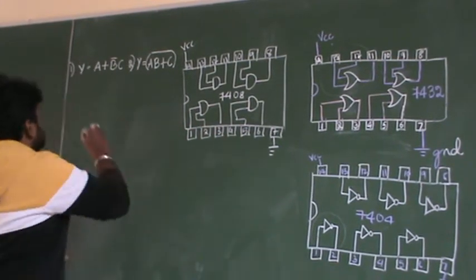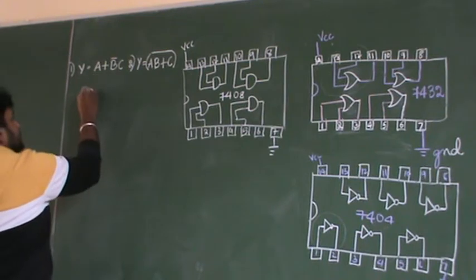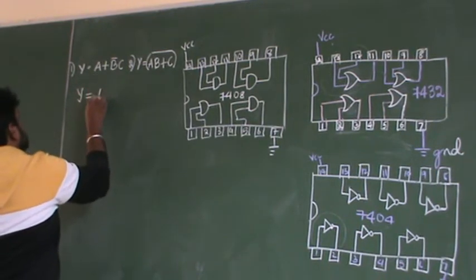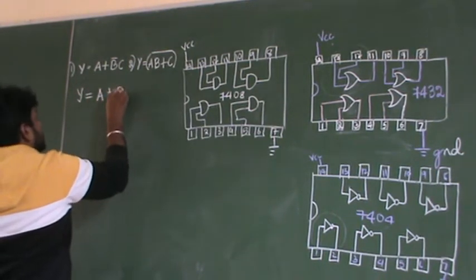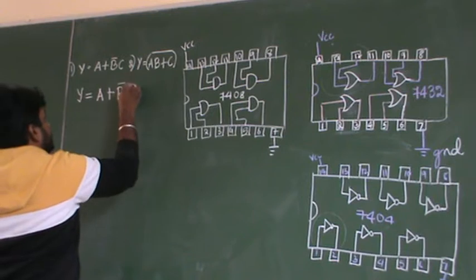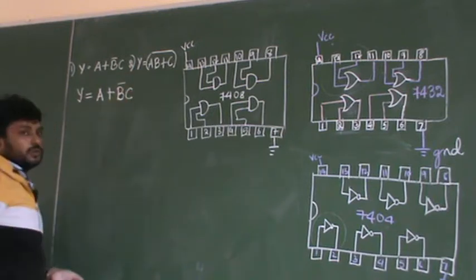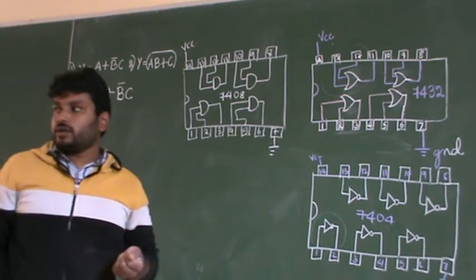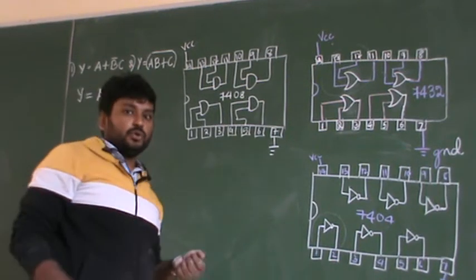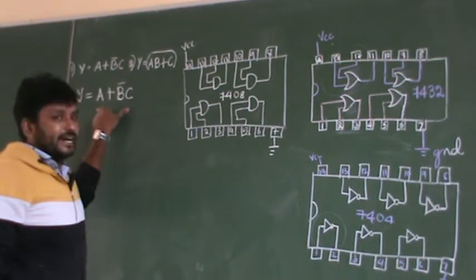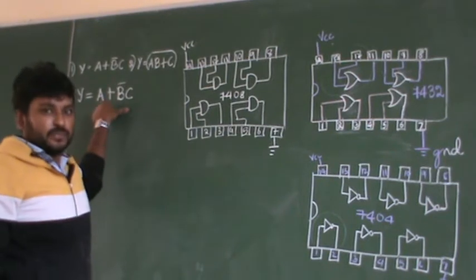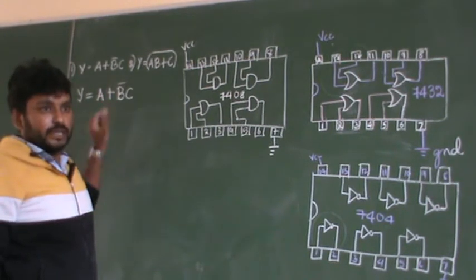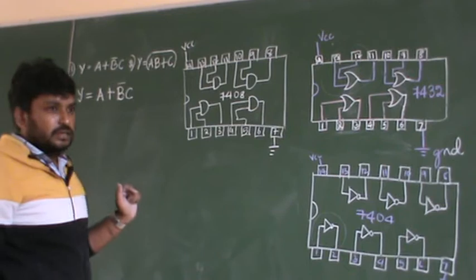The first expression is Y equals K plus D̄ into C. This is the first expression. Now I have to write the circuit diagram for this. Since there are three variables, I need to work through each term carefully.